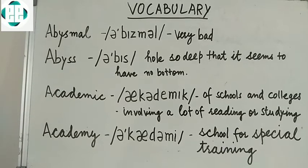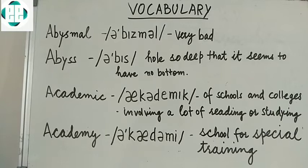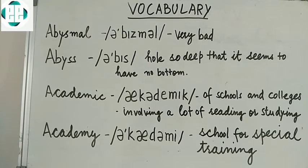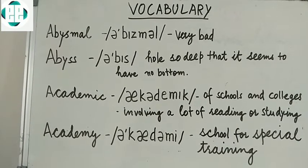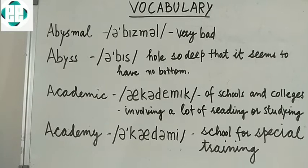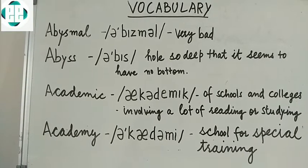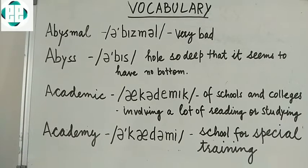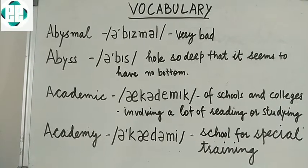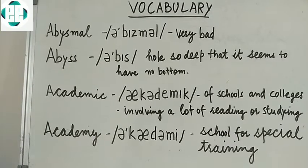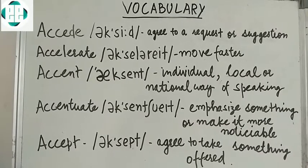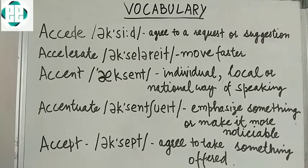You have seen that the first word 'abysmal' has the sound of Z in between and it started from A. The second one again started from A, the third with the sound A, and the fourth once again from A. Take care while you pronounce 'academic' — it is academic. The next word is 'accede.' Accede means to agree to a request or suggestion. The next one is 'accelerate.' Accelerate means to move faster.